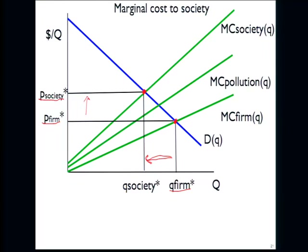Not necessarily — they could have all different intercepts. You could also say, what if this pollution curve, the first 10 units, they're not polluting very much, and then it starts to take off. There could be many different shapes for the pollution curve.